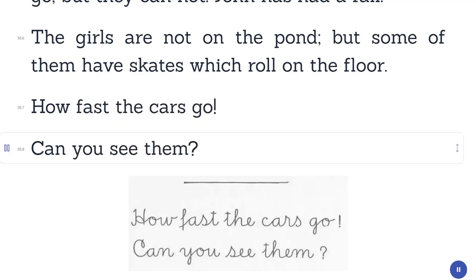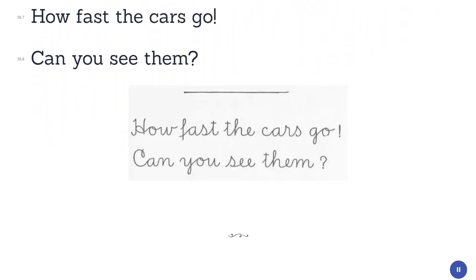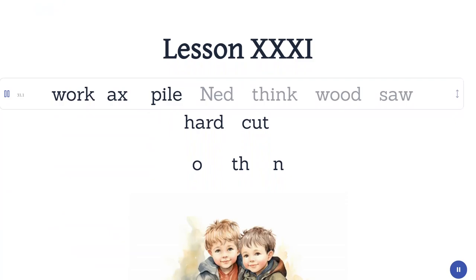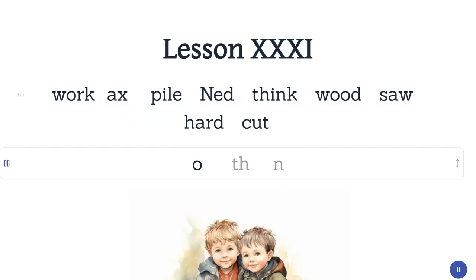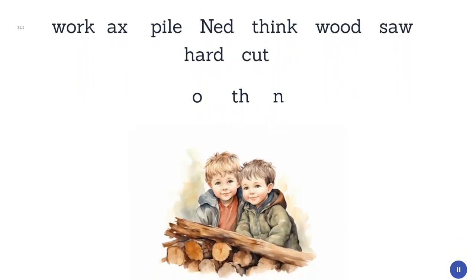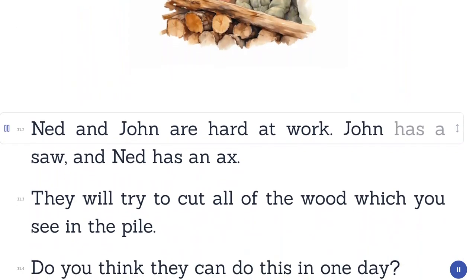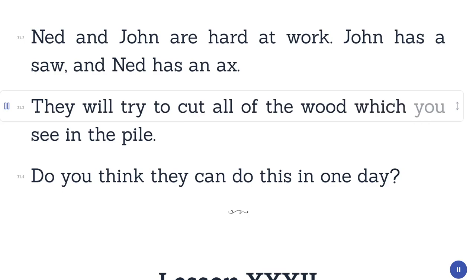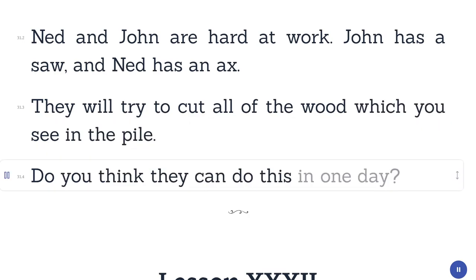How fast the cars go. Can you see them? Lesson 31. Work. Axe. Pile. Ned. Think. Wood. Saw. Hard. Cut. Ned and John are hard at work. John has a saw, and Ned has an axe. They will try to cut all of the wood which you see in the pile. Do you think they can do this in one day?